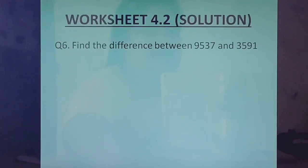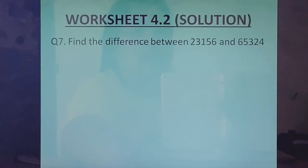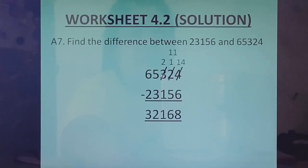Question 6: Find the difference between 9537 and 3591. Since 9537 was bigger, we have written that number on top and then subtracted — that was a point to be noted. The answer is 5946. Question 7: Find the difference between 23156 and 65324. Here the second number is bigger, so the second number will be on top: 65324 minus 23156. When we subtract, we get the answer 32168.